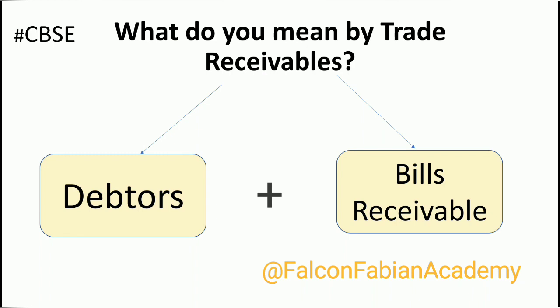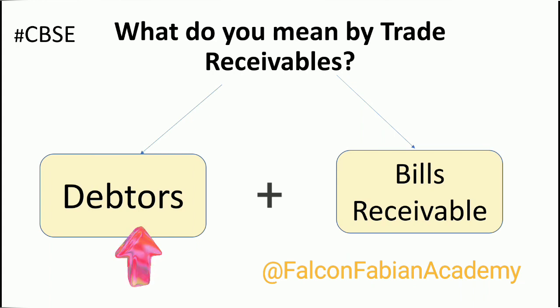A debtor is a person, a firm, or an entity to whom goods or services are sold on credit. Let's understand this through an example. Suppose I take a credit card from a bank and buy stuff using this credit card. Any money that I have spent using this credit card in a given month, I will have to pay to the bank at the last day of the month.